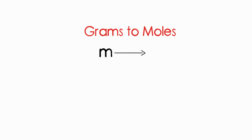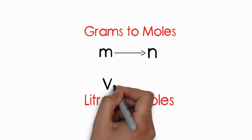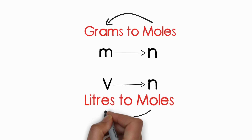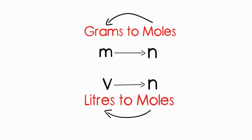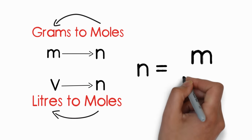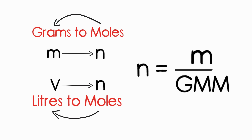That's how we convert grams to moles or litres to moles. In some questions we need to convert moles to grams or moles to litres — in those cases we use the same formulas. For example, using n = m / GMM: if moles are given and you want to calculate mass, you know n and can calculate GMM, so putting those values in lets you find mass.